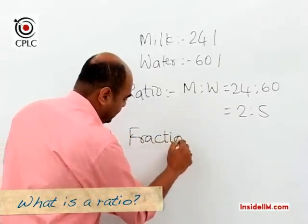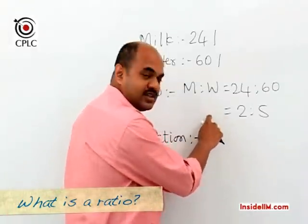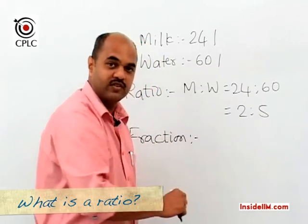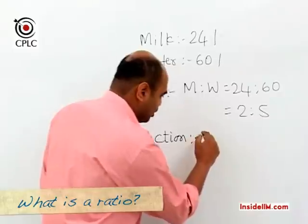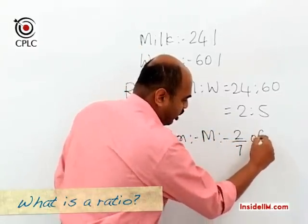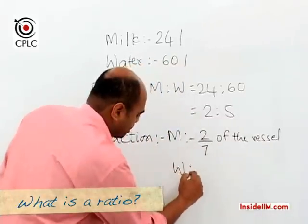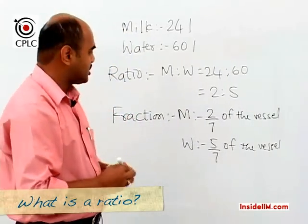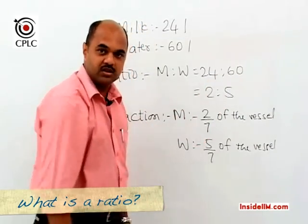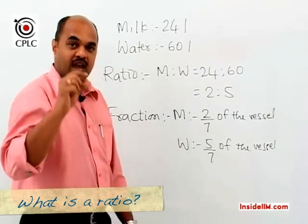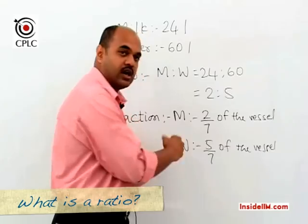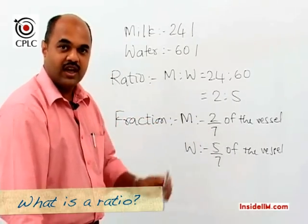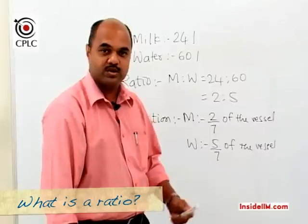Now if I want to understand in terms of a fraction, I know that in this vessel two parts out of a total of 7 parts is milk, and 5 parts out of the total of 7 parts is water. Hence as a fraction, milk is 2/7 of the vessel whereas water is 5/7 of the vessel. When we talk in terms of a ratio it is how much milk is to how much water, but when we talk in terms of a fraction we say how much milk out of the total and how much water out of the total.